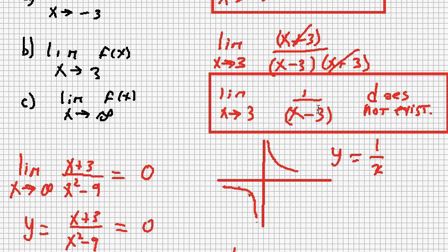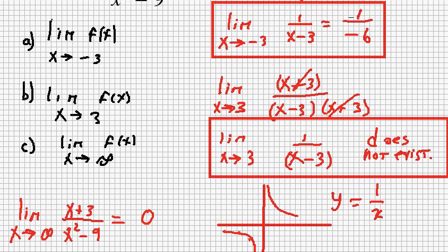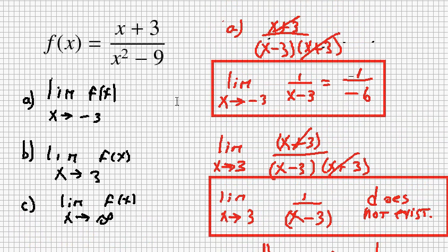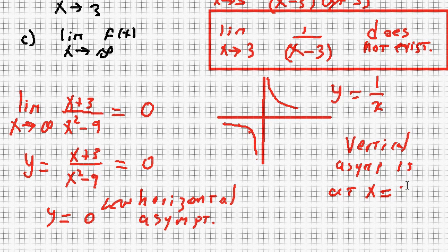Something I should mention: because this function does not have a limit as x approaches 3, this tells me that the vertical asymptote of this rational expression is at x equals 3. The vertical asymptote is at x equals 3. Thank you for listening.